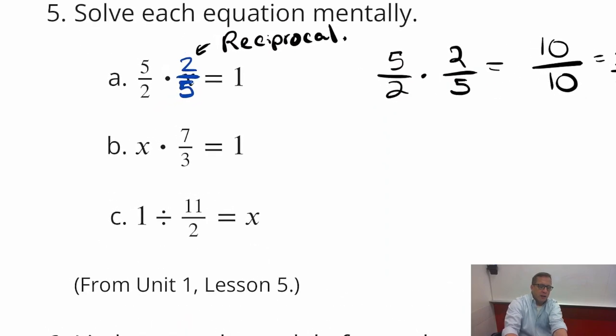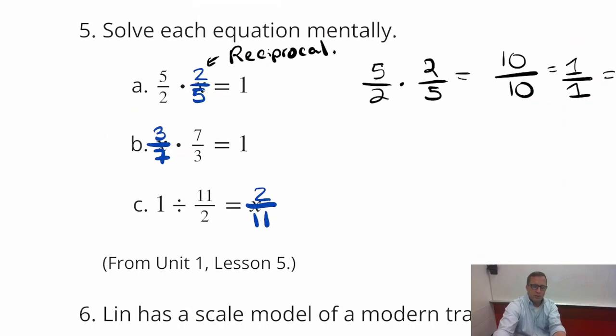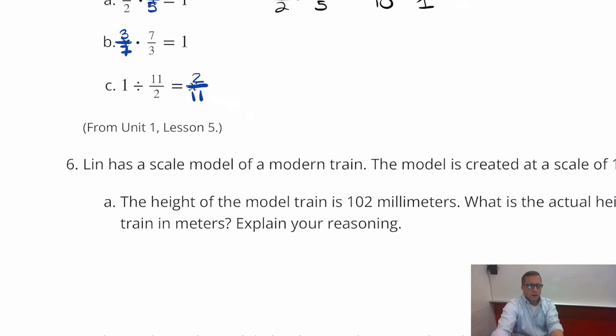So like right here, what times seven-thirds? Well, it's got to be three-sevenths. So that's got to be three-sevenths right there. And then right here, one divided by eleven-halves is going to equal the reciprocal. So that's going to be two-elevenths.